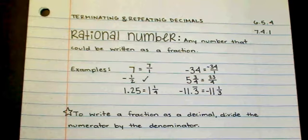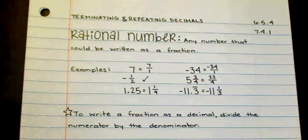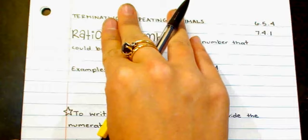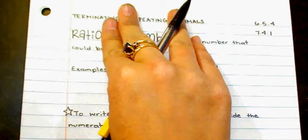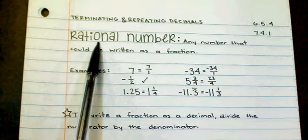The first thing we're going to look at as we investigate rational numbers are terminating and repeating decimals. First we need to define what is a rational number. A rational number is going to be any number that we can write as a fraction. You may recognize the word ratio in rational number, because a ratio is also a number that can be expressed as a fraction.